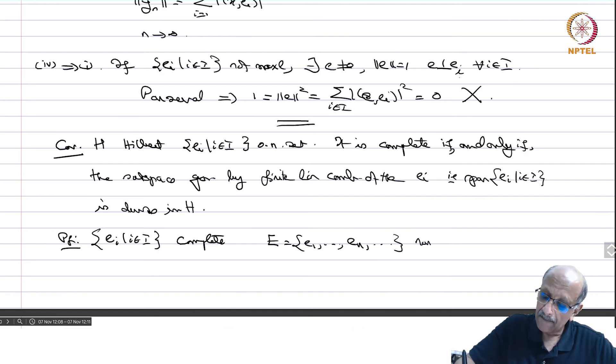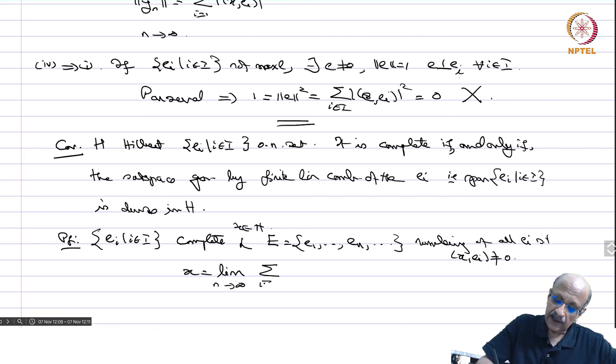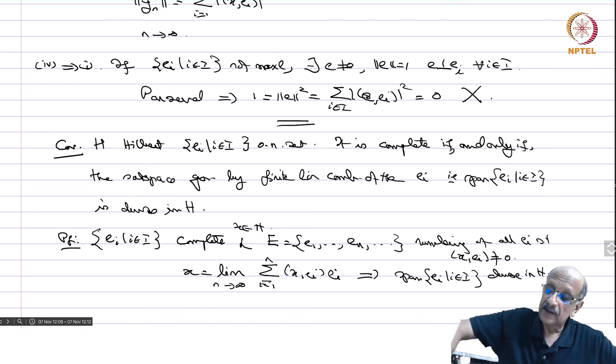This is the numbering of all EI such that X EI is not 0. Let X belong to H and then we know that X is the limit as n tends to infinity sigma i equals 1 to n X EI EI and therefore implies span EI I in I is dense in H. Every element can be approximated as a finite linear combination.